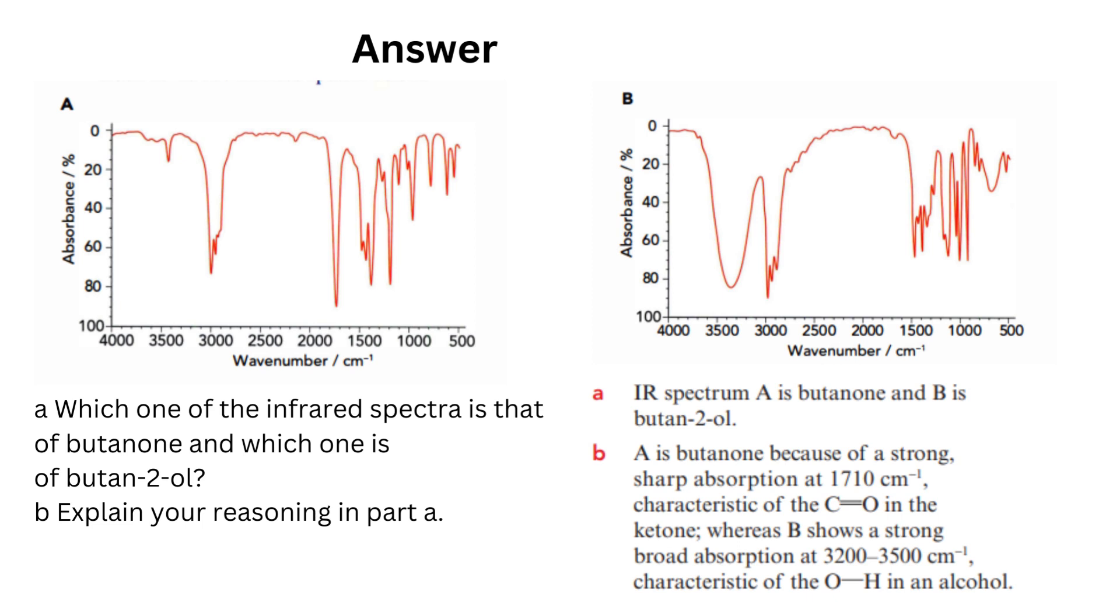IR spectrum A is butanone and B is butan-2-ol. The reason for that is A is butanone because of a strong, sharp absorption at 1710 cm⁻¹, characteristic of the C=O in the ketone, whereas B shows a strong, broad absorption at 3200 to 3500 cm⁻¹, characteristic of the O-H in an alcohol.